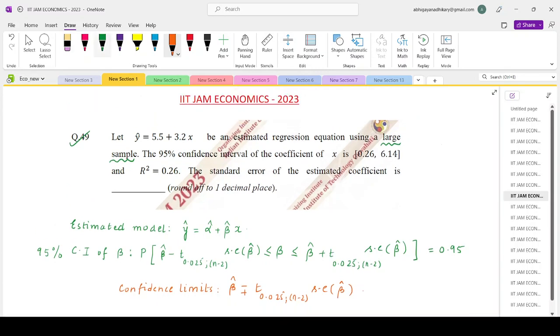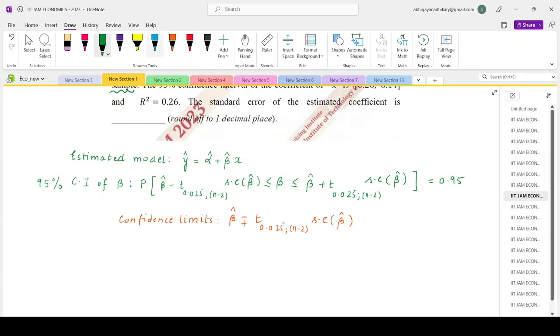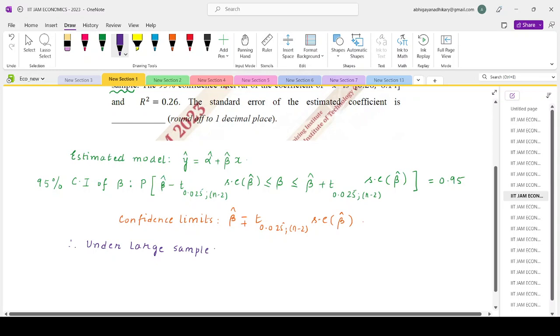Note something. The question tells us that this regression equation has been estimated using a large sample. So under large sample theory, this t distribution can be easily approximated by the standard normal distribution. Therefore, under large sample, this t distribution with n minus 2 will be same as the standard normal distribution. So our confidence limits will now become beta hat plus minus tau of 0.025 into standard error of beta hat.